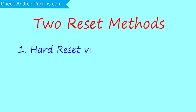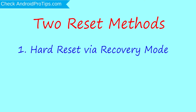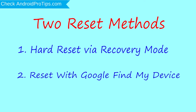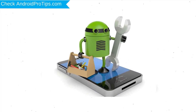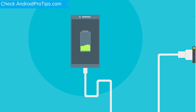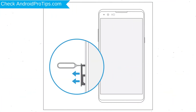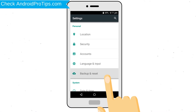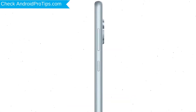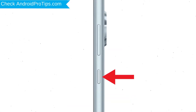First method: hard reset via recovery mode. Second method: reset with Google Find My Device. Before resetting your mobile, your battery must be above 50%. Remove SD cards and SIMs, and backup your Android mobile data if possible. Then power off your mobile by holding the power button.